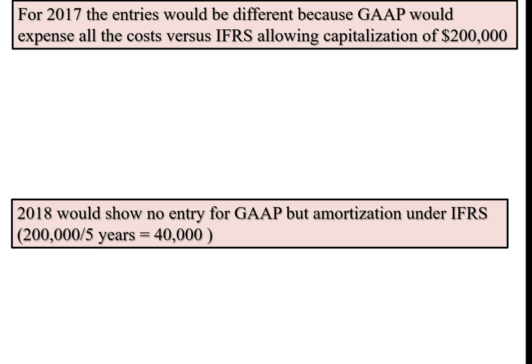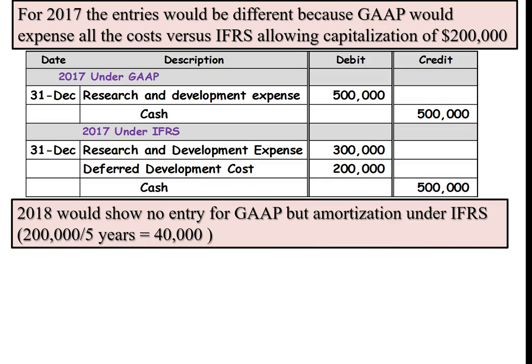For 2017, the entries would be different because GAAP would expense all the costs versus the International Standard, which would allow the capitalization of $200,000 as an intangible asset. Under GAAP, the whole $500,000 amount would be expensed. Under the International Standard, only $300,000 would be expensed, and the other $200,000 identified as an intangible asset would be capitalized. We cannot take any amortization because the product has not yet gone to market.